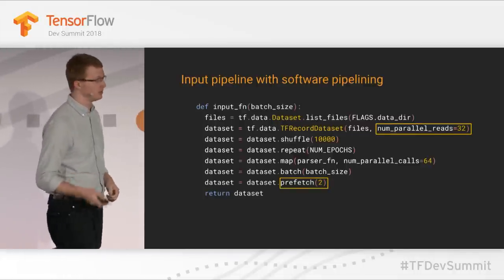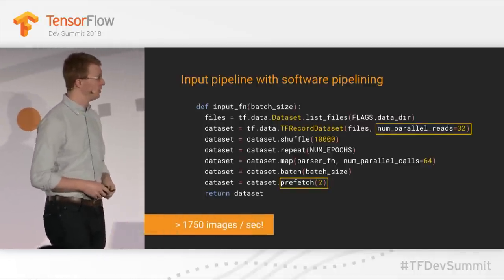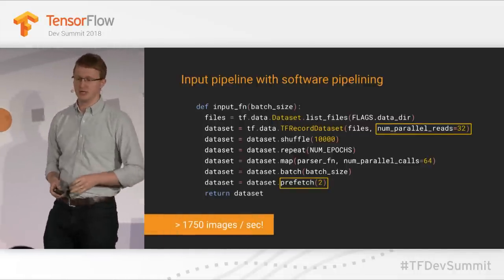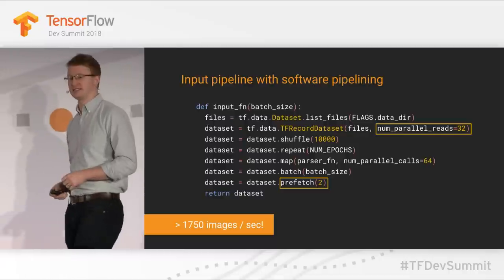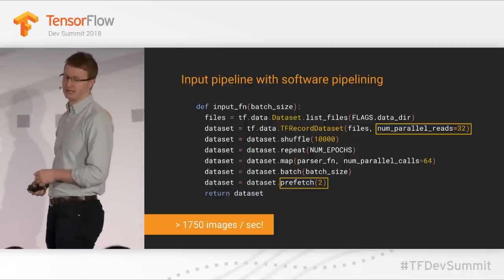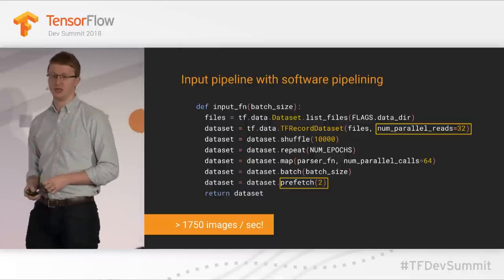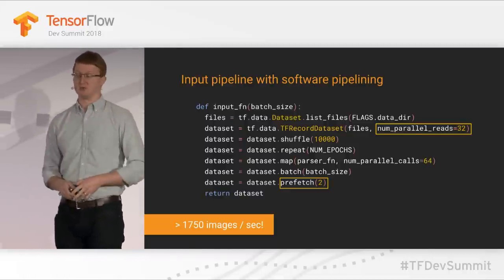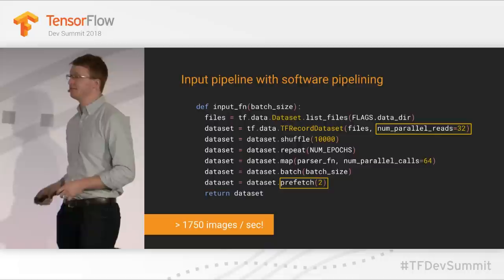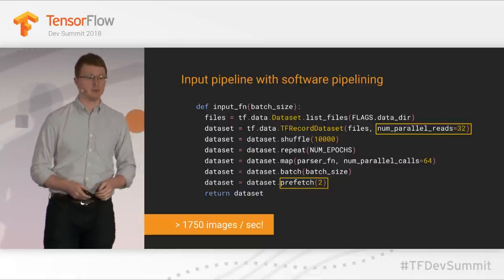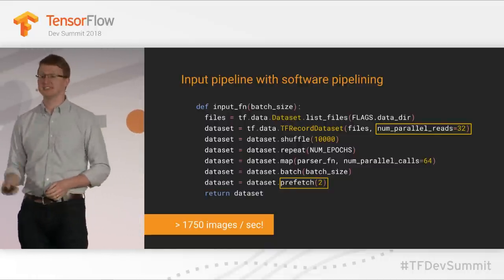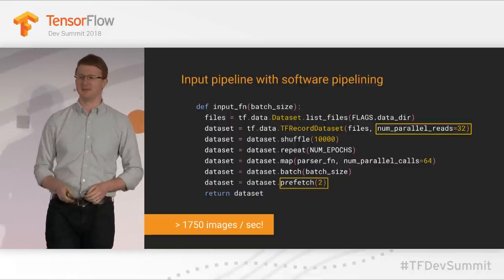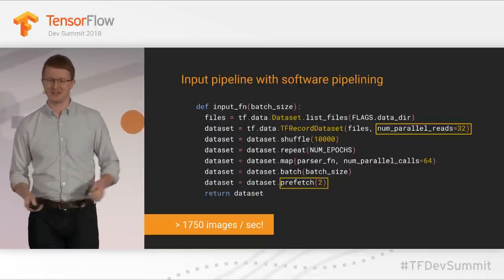What happens if you do this? With a Cloud TPU, you'll get over 1,700 images a second with these optimizations — about 12 times faster than our initial input pipeline, with actually less than 60 characters worth of typing. So that's pretty good.